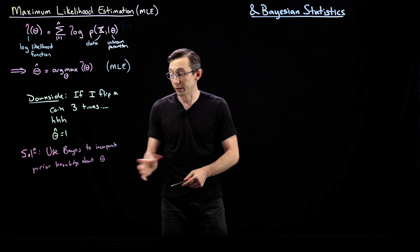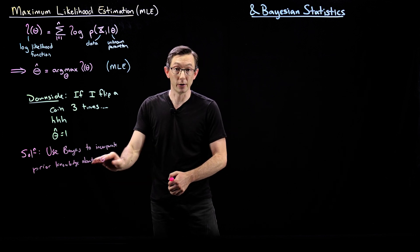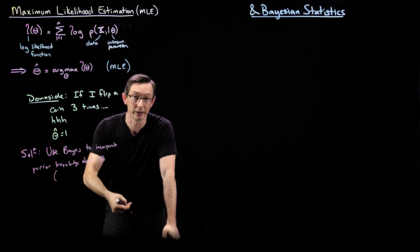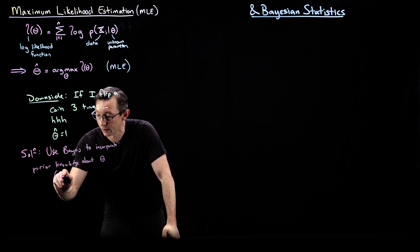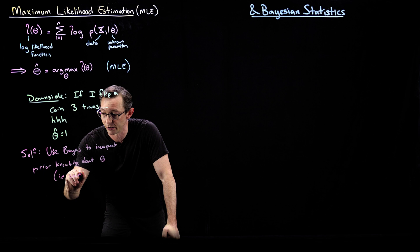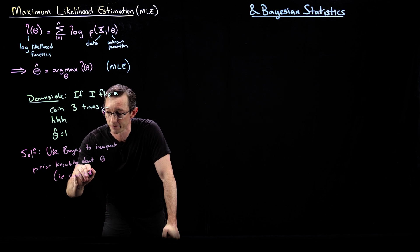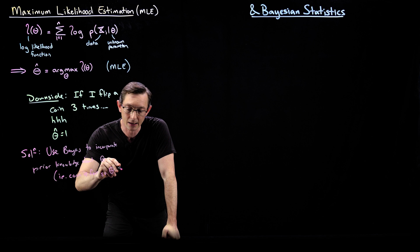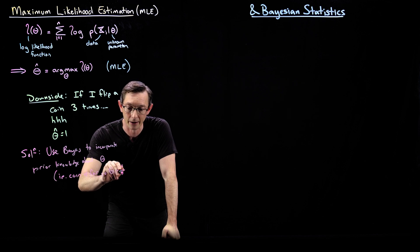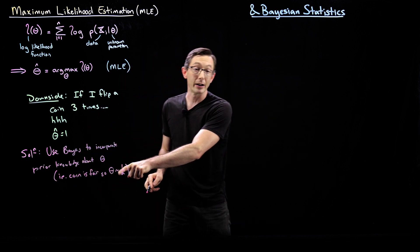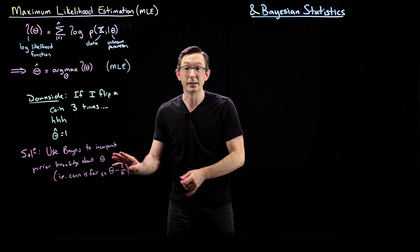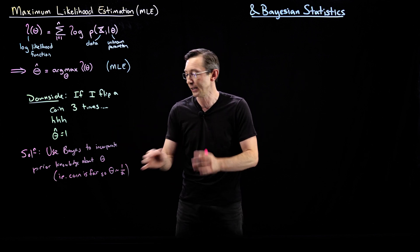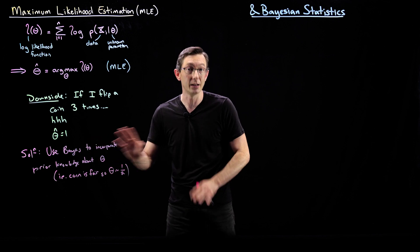So literally, I might have a prior distribution of what I think theta is. Maybe I think theta is a fair coin. So for example, my strong prior knowledge is that a coin is going to be fair. So maybe theta is close to one half. And I'm being very loose here. I might say that it's a normally distributed variable with mean one half and some variance. There's lots of ways of putting this prior knowledge in.